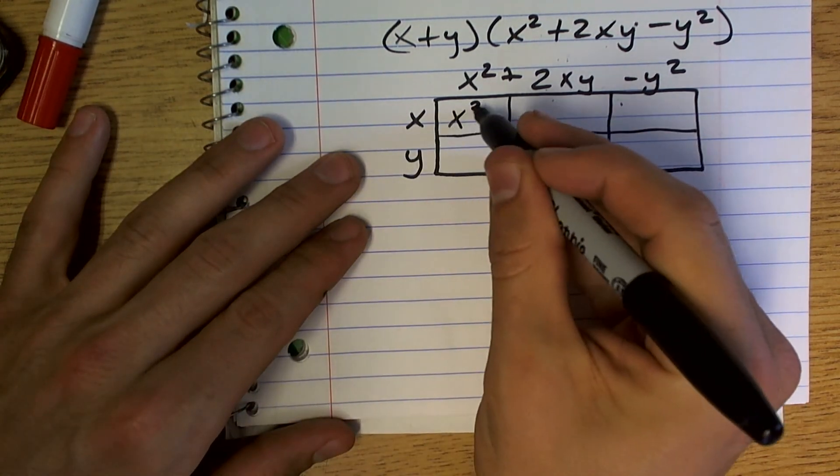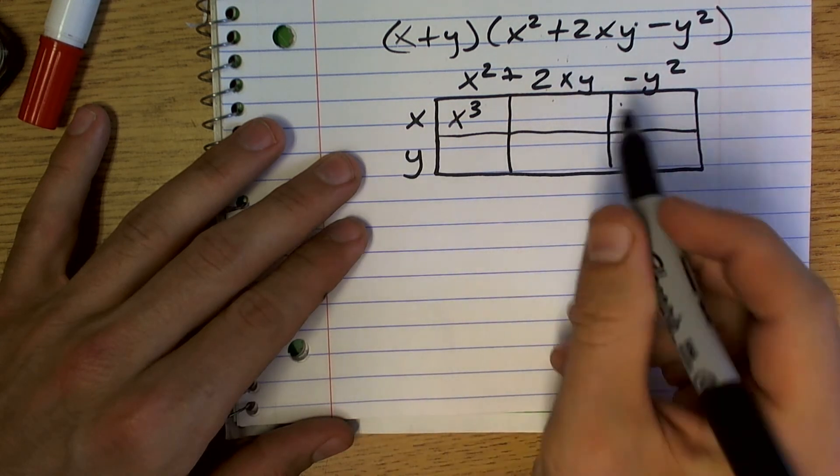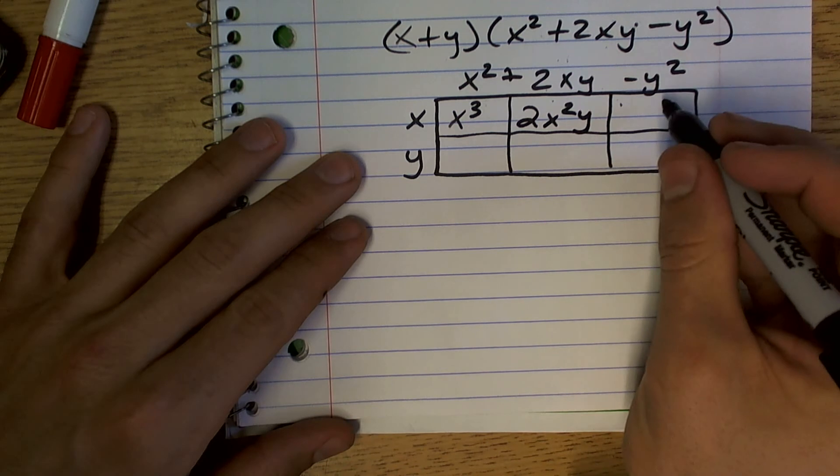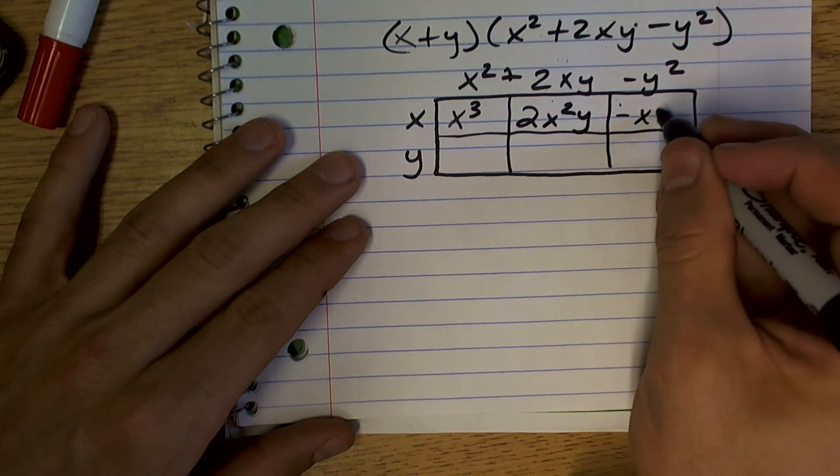x times x squared is x cubed. x times 2xy is 2x squared y. x times negative y squared is negative xy squared.